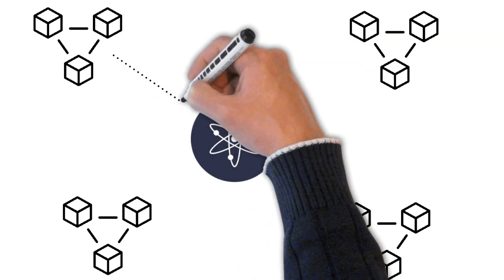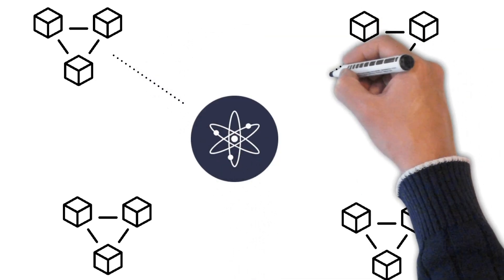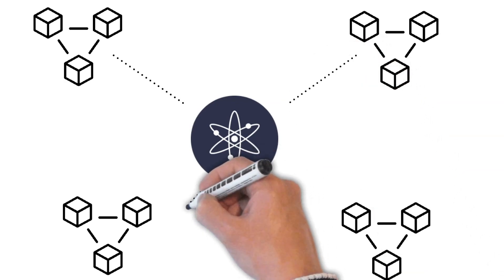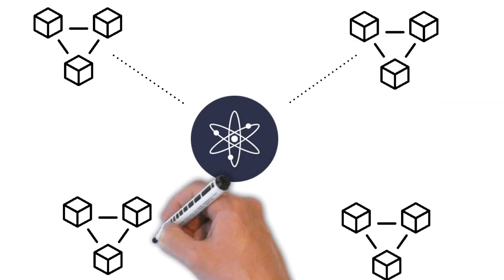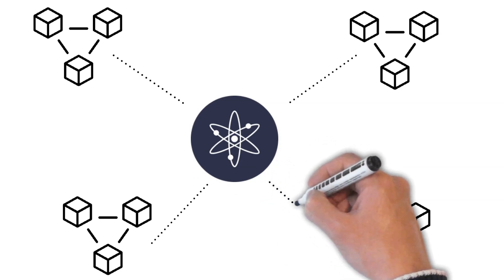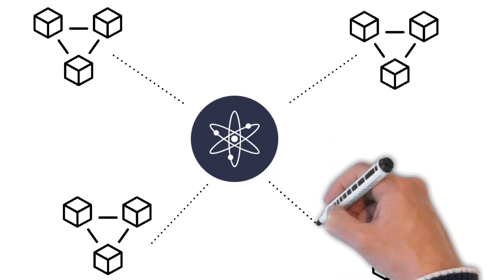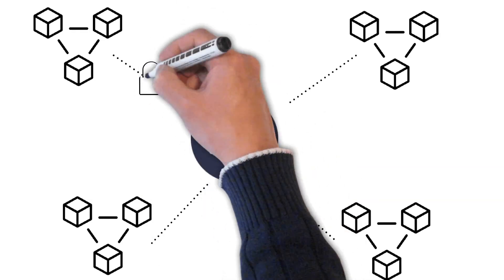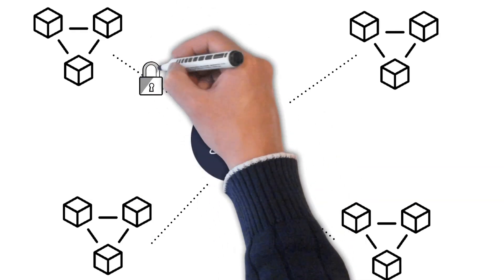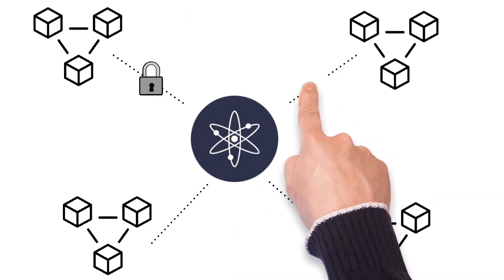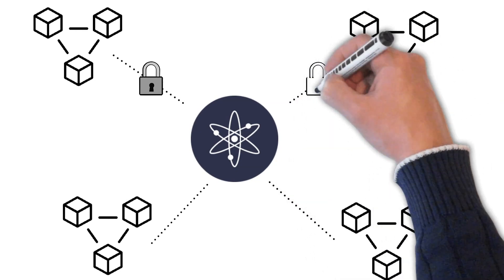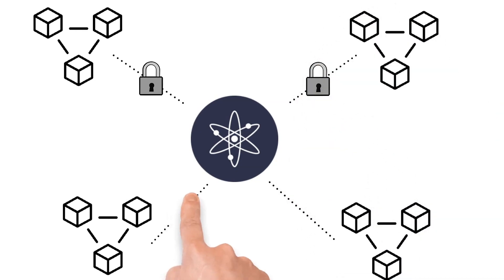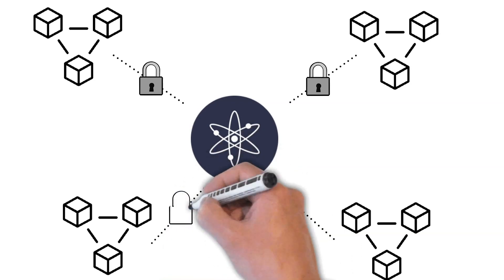Right now there are many critics claiming that the tokenomics of Atom are not the best, and well, there is some truth to this. However, the tokenomics of Atom will significantly improve once interchain security is shipped. With interchain security, the Cosmos Hub will be responsible to secure a wide range of blockchains. In plain words, by staking Atom you will not only be able to secure the Cosmos Hub, but also many other blockchains. This concept is very similar to Polkadot.